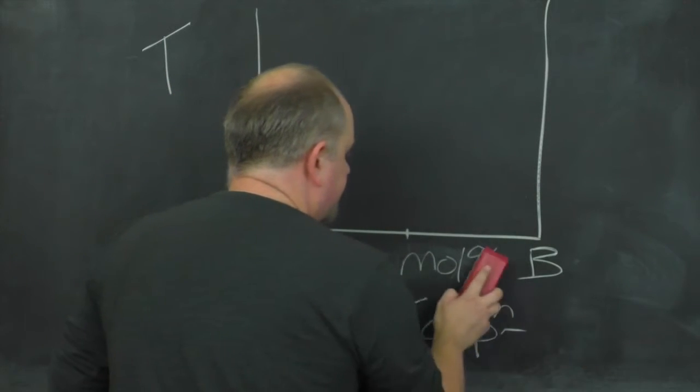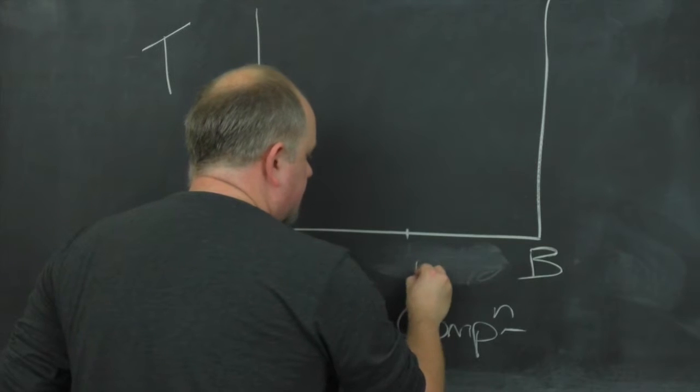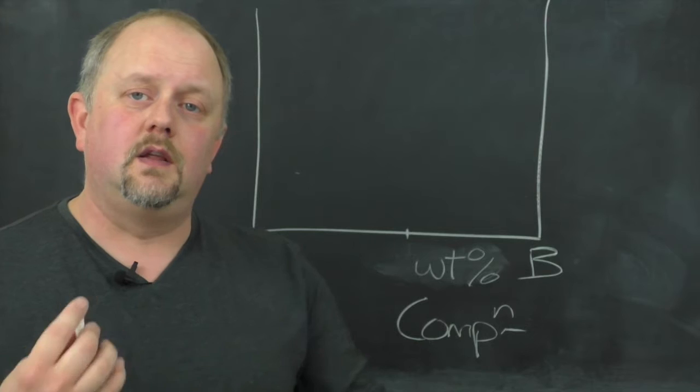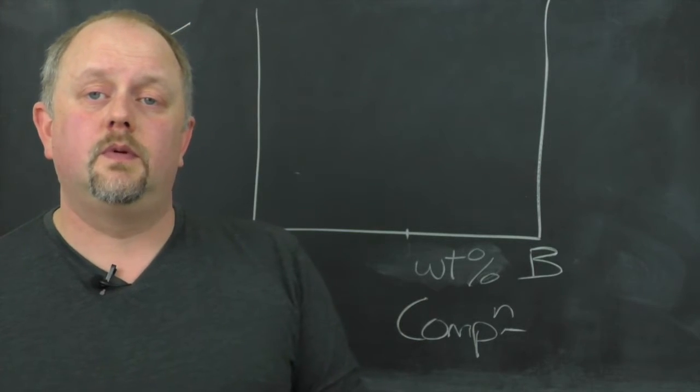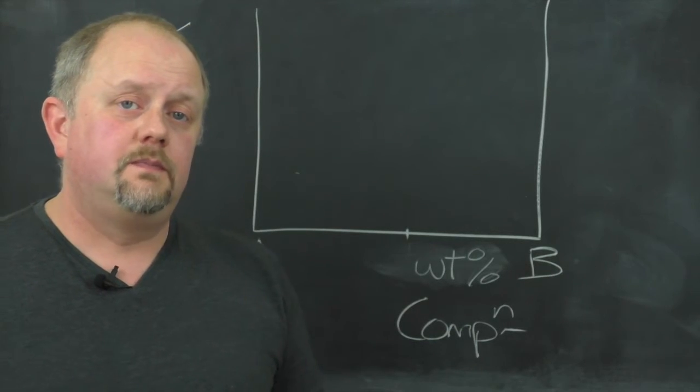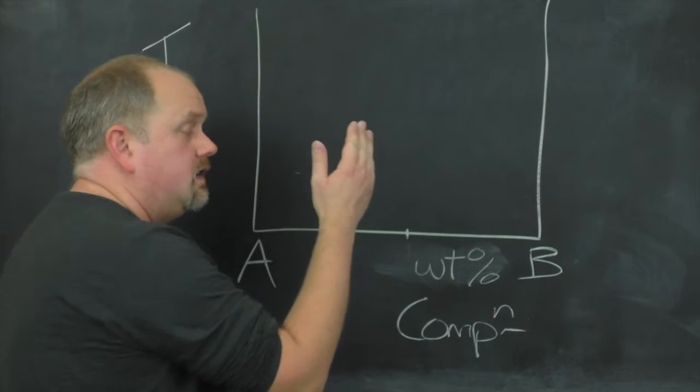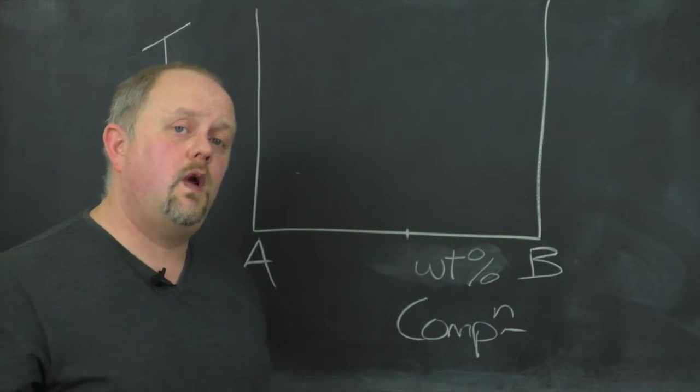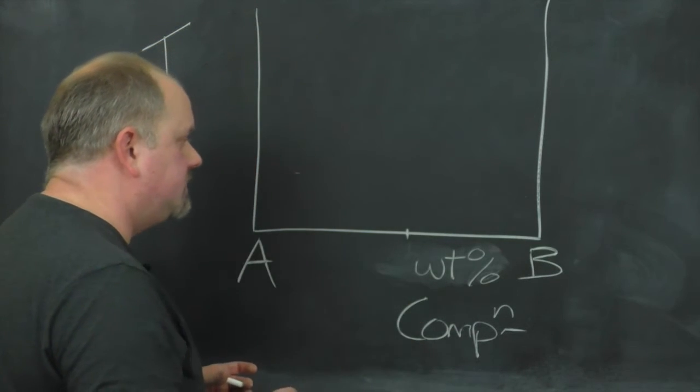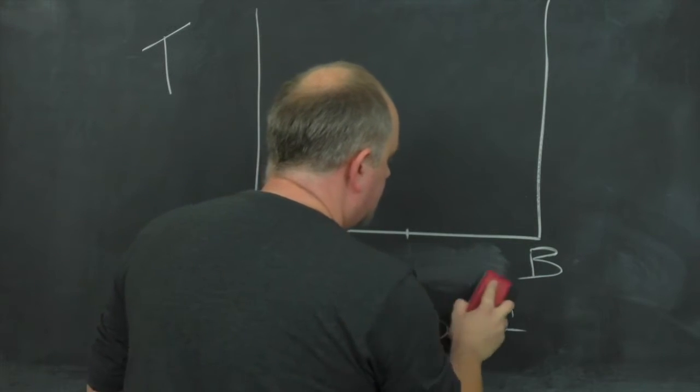The third system is weight percent. Weight percent is really nice because it feels scientific - you're dealing with the formula weights of the components and the composition you're interested in. But it's very hard to relate the composition of a material in weight percent to its position on the composition axis. So for that reason I generally prefer to use mole percent on my composition axes.